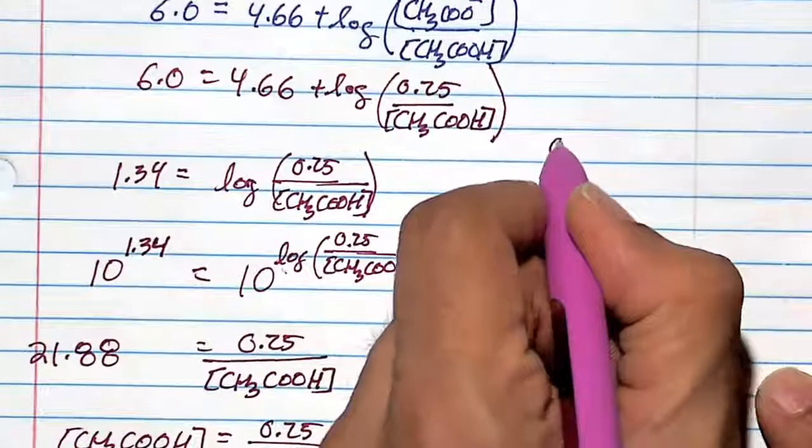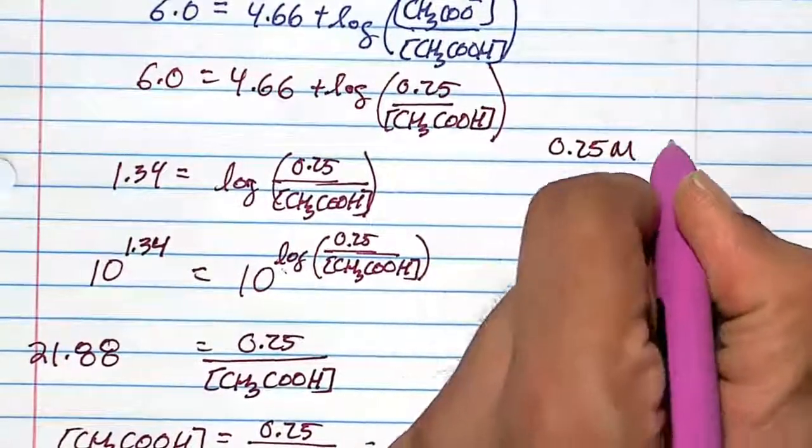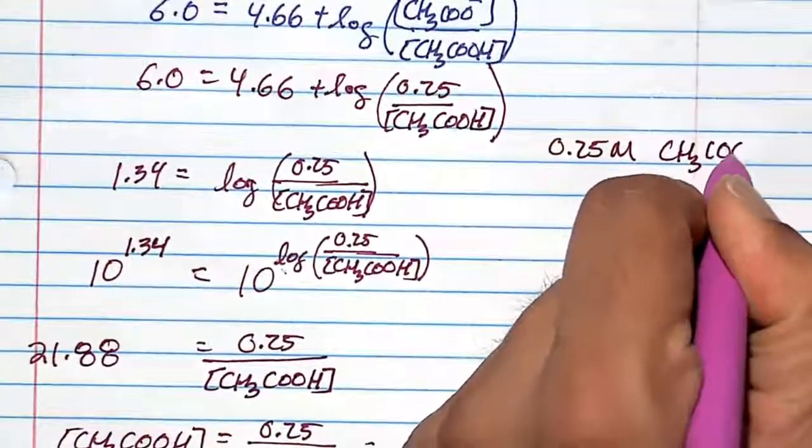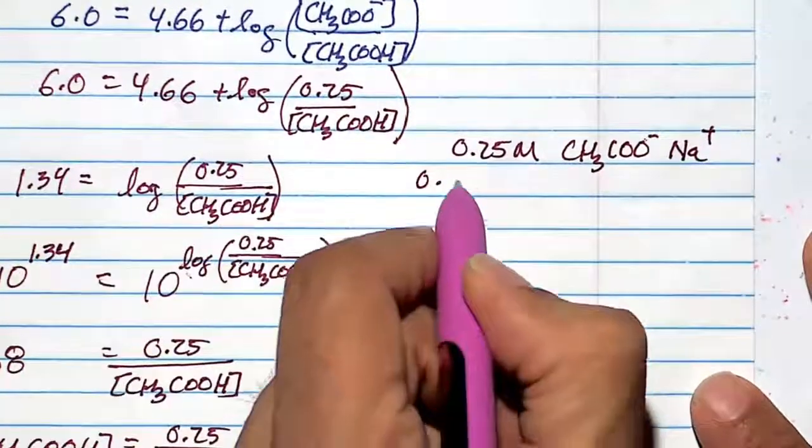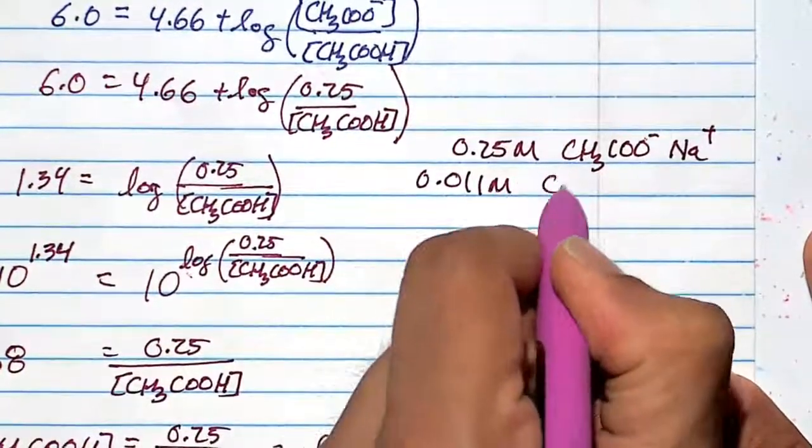So in 0.25 molar of acetate ion, sodium acetate, sodium is a counter ion.